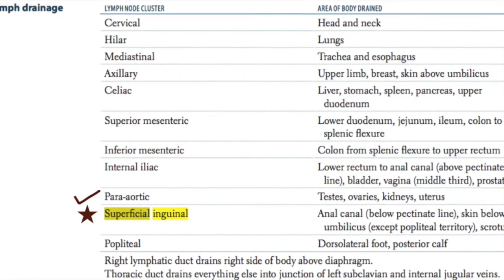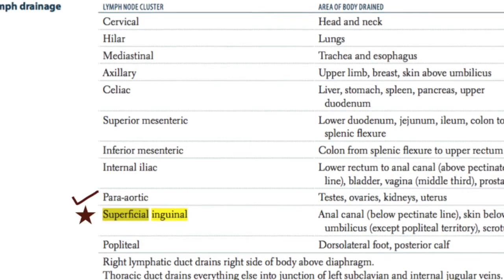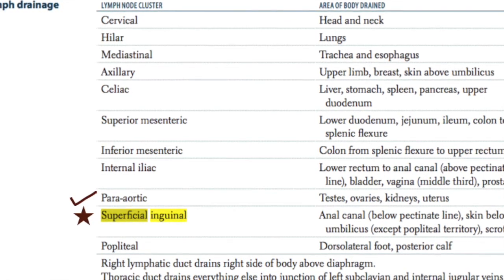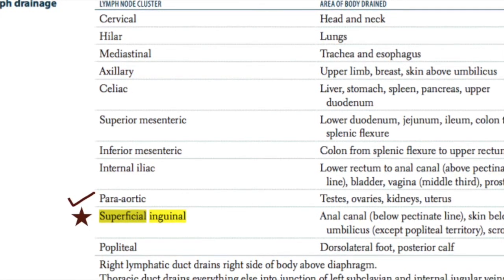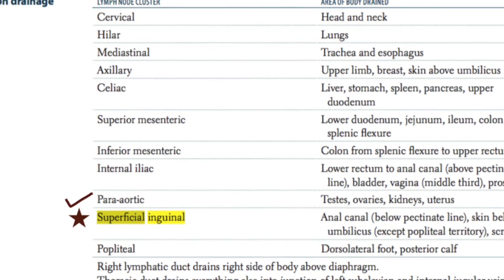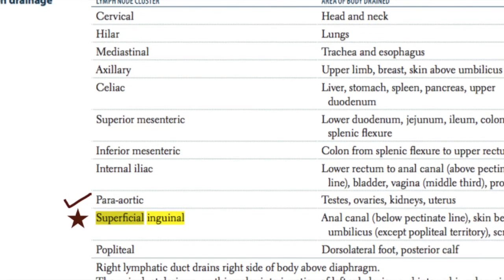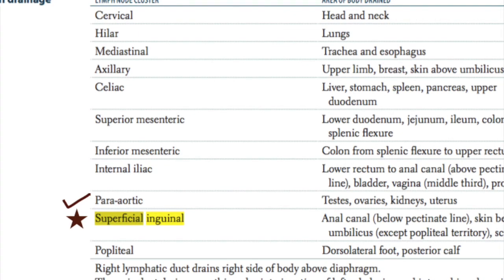For external hemorrhoids, the question may be worded with a longer vignette, but ultimately it comes down to: the patient has external hemorrhoids, and the associated lymph node — the answer — is the superficial inguinal node. Hope that helps. Thank you for watching.